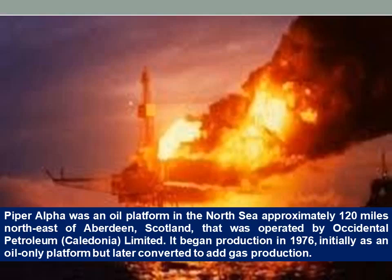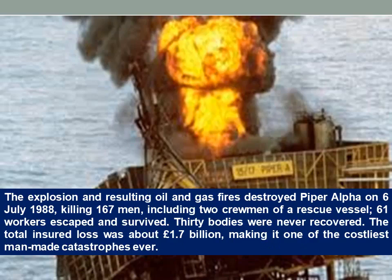Piper Alpha was an oil platform in the North Sea approximately 120 miles northeast of Aberdeen, Scotland, operated by Occidental Petroleum Caledonia Limited. It began production in 1976, initially as an oil-only platform but later converted to add gas production. The explosion and resulting oil and gas fires destroyed Piper Alpha on 6 July 1988, killing 167 men, including two crewmen of a rescue vessel. 61 workers escaped and survived, and 30 bodies were never recovered. The total insured loss was about 1.7 billion pounds, making it one of the costliest man-made catastrophes ever.